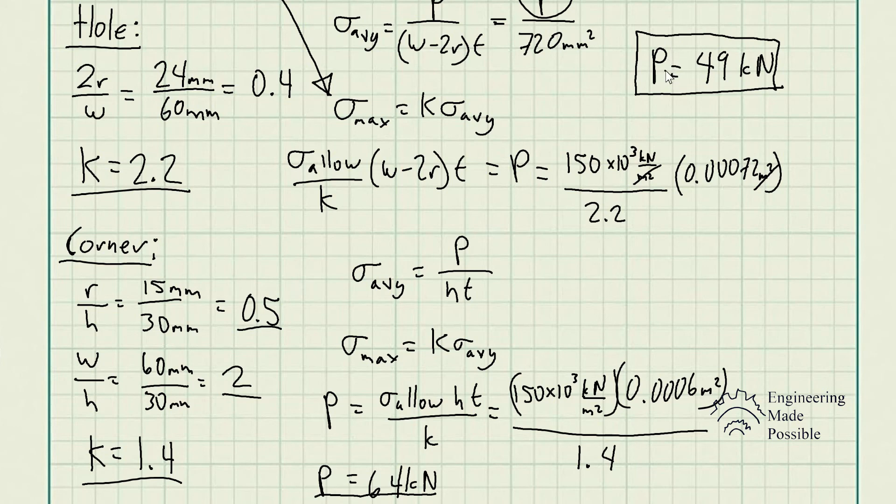Now the question is: what is the maximum load this plate can handle? We have 49 kilonewtons at the hole and 64 kilonewtons at the corner. You choose the lowest value — because if you exceed 49 kilonewtons, you will exceed the allowable stress at the hole even though the corner would still be fine. You must always go with the most conservative value to not exceed the allowable stress. Therefore, the maximum external load is P = 49 kilonewtons. This is how you solve problems dealing with stress concentrations for holes and corners with radii.